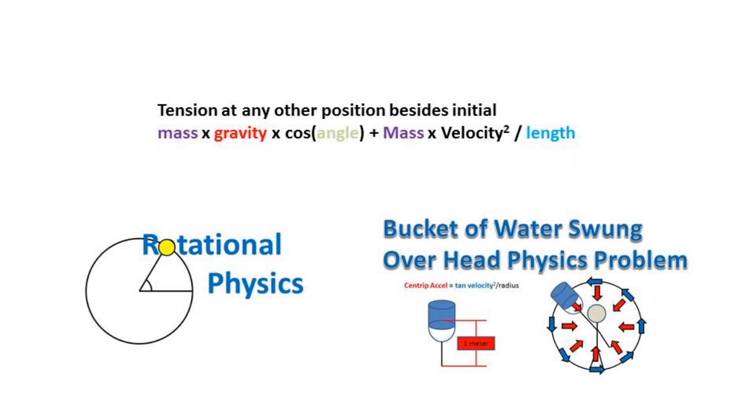Now if we wanted to solve for the tension at any given point, we can use the formula mass times gravity times the cosine of the angle plus mass times velocity squared over the length. This is simply the equation to find the tension at rest with the centripetal acceleration equation we used in previous videos added to it.